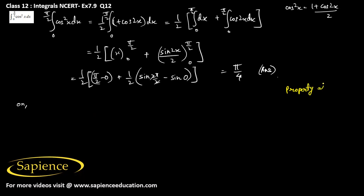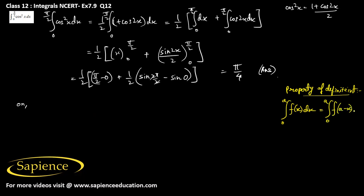The property of definite integrals we will use is: the integral from 0 to a of f(x) dx equals the integral from 0 to a of f(a − x) dx.